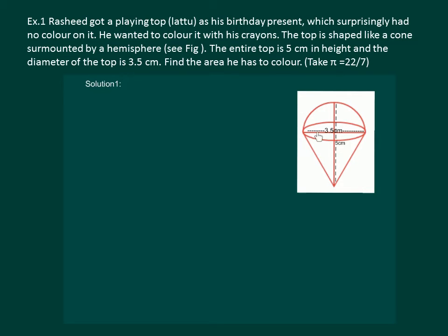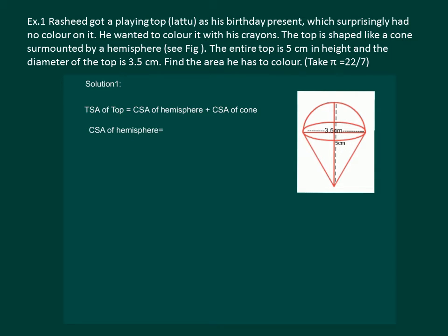So we have a cone with a hemisphere on its head. The total surface area of this top will be equal to curved surface area of the hemisphere plus curved surface area of the cone. Let us first find curved surface area of hemisphere, which is equal to half of the curved surface area of the complete sphere, which is given by 4πr². That means it will be given by 2πr².